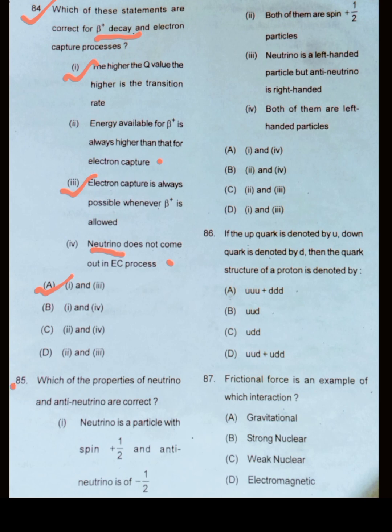Now in question number 85, which of the properties of neutrino and antineutrino are correct? Neutrino is a particle with spin half and antineutrino is of spin minus half. No, this is incorrect. Both of them have spin half. This is correct.